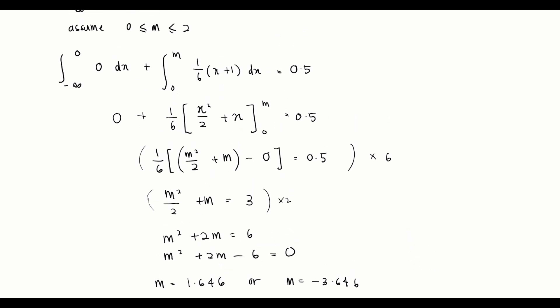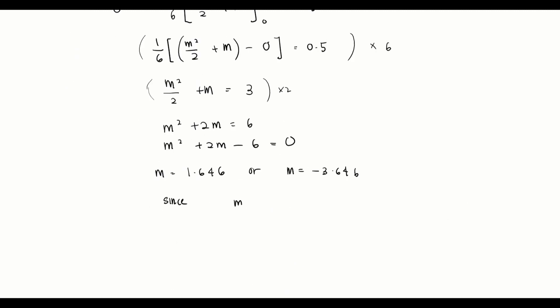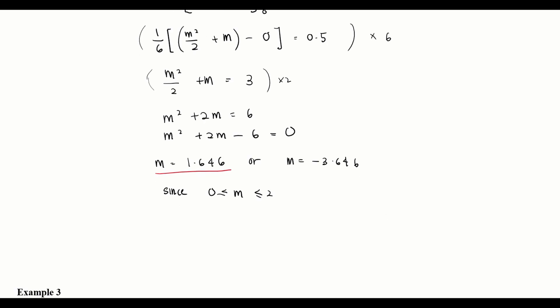We check validity by referring back to our assumption that m is between 0 and 2. Since 1.646 is in that range and −3.646 is out of range, we discard the negative value. Therefore the median is m = 1.646.